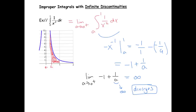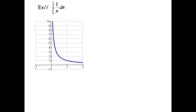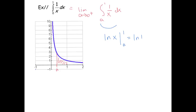Let's do another example. Let's look at the integral from zero to one of one over x. Again, the issue is that discontinuity at zero. So I'm going to write this as the integral from a to one of one over x, and take the limit as a goes to zero from the right. We know that this is the natural log of x from a to one, which is ln of one minus ln of a.